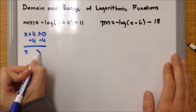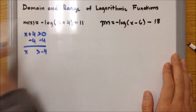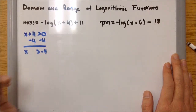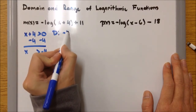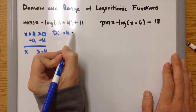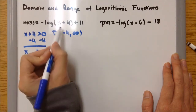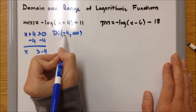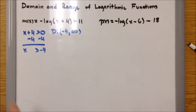Solving for x: x plus 4 greater than 0, so x is greater than negative 4. Any number greater than negative 4 plugged in here will give a result more than 0, so that's good. Our domain is negative 4 to positive infinity with parentheses, because plugging in negative 4 makes the argument 0, which is undefined or invalid.